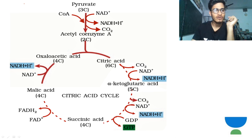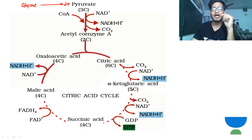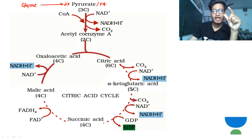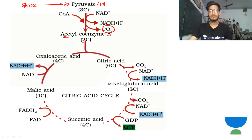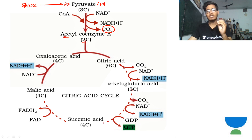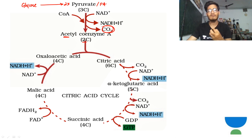Glycolysis started here - glucose got converted into two molecules of pyruvate acid. That pyruvate acid, which was a 3-carbon compound, got converted into acetyl coenzyme A, which has 2 carbons - meaning one carbon dioxide was released. Because a 3-carbon compound is forming a 2-carbon compound, one carbon is lost. That carbon gets ejaculated - released - in the form of CO2. Then NADH formation occurs here, which we won't focus on now.